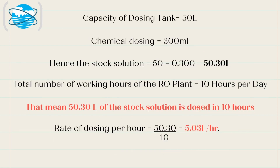How to set the rate of dosing per hour: if the capacity of the dosing tank is 50 liters and the chemical dosing is calculated as 300 milliliters, then the stock solution will be 50 plus 0.300 equals 50.30 liters. As the total number of working hours of the RO plant is 10 hours per day, that means 50.30 liters of the stock solution is dosed in 10 hours. Hence the rate of dosing per hour will be 5.03 liters per hour.